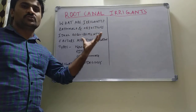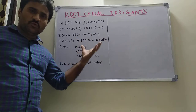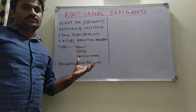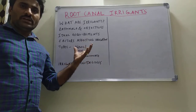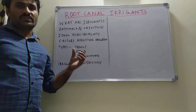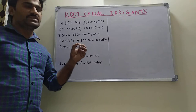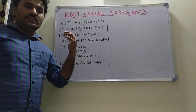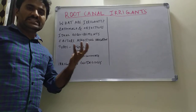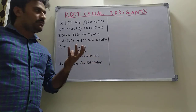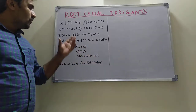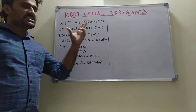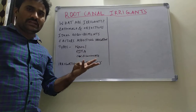The main objective of using irrigants is to flush out and remove dentinal chips and bacterial products from the root canal. They also provide lubrication for easy instrumentation during the filing procedure.